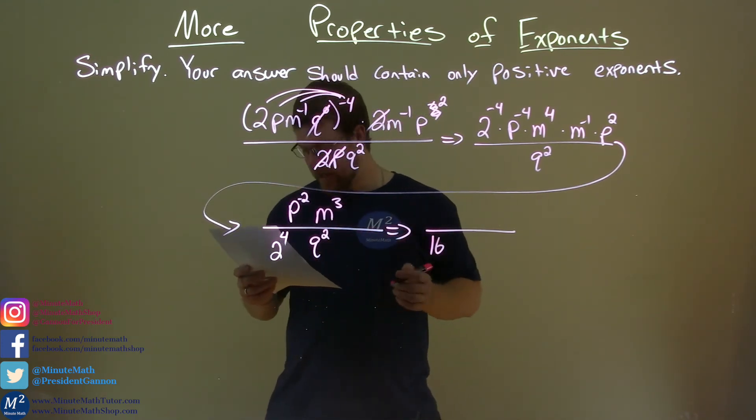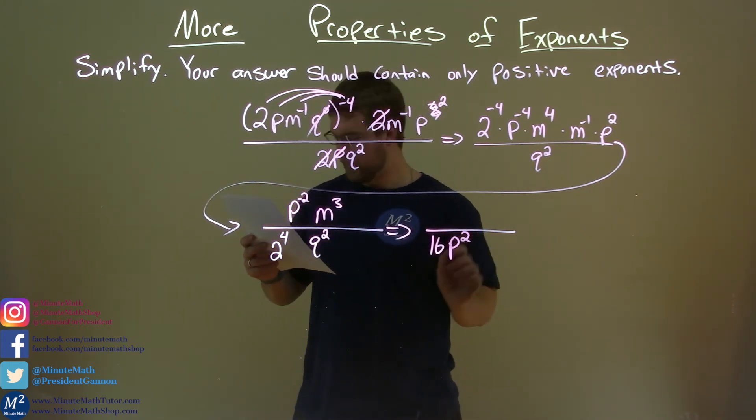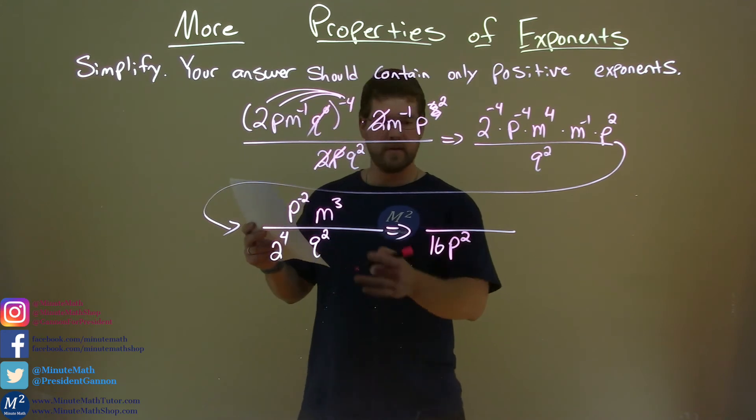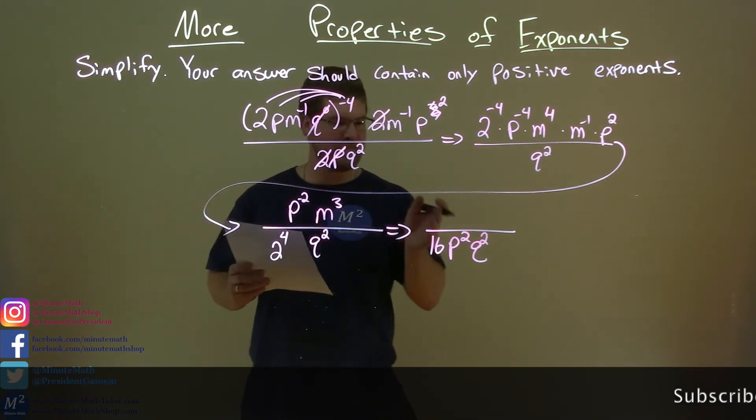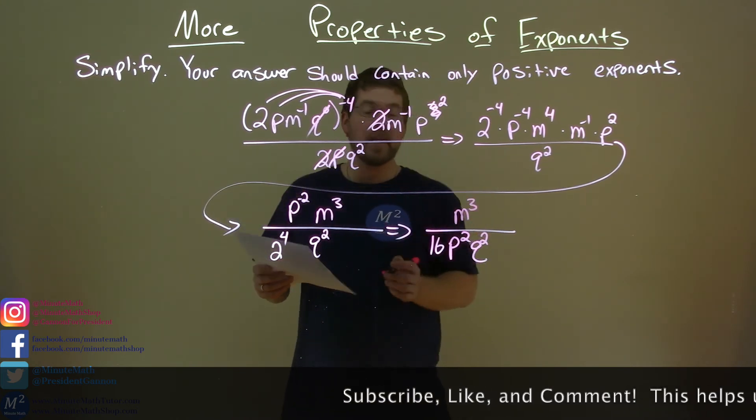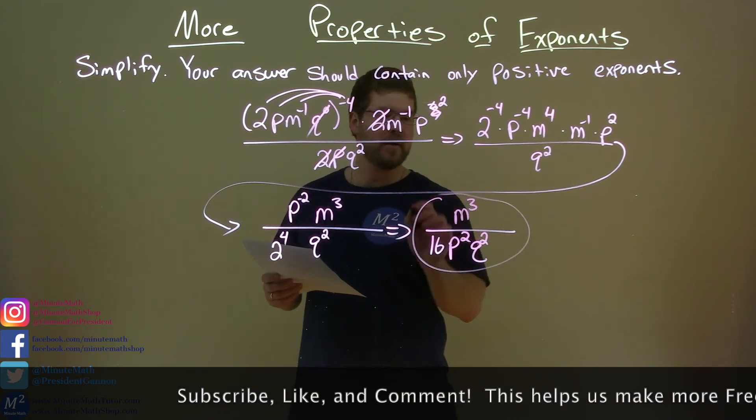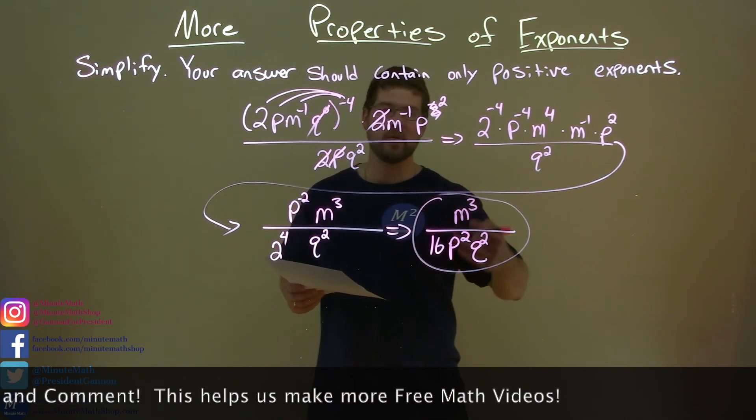We're then going to bring down the p squared right there. And lastly, the q squared stays down there. Sorry, I was just making sure I did it right. I did. And the m to the 3rd stays in the numerator. And now we're done. Our final answer here is just m to the 3rd over 16 p squared, q squared.